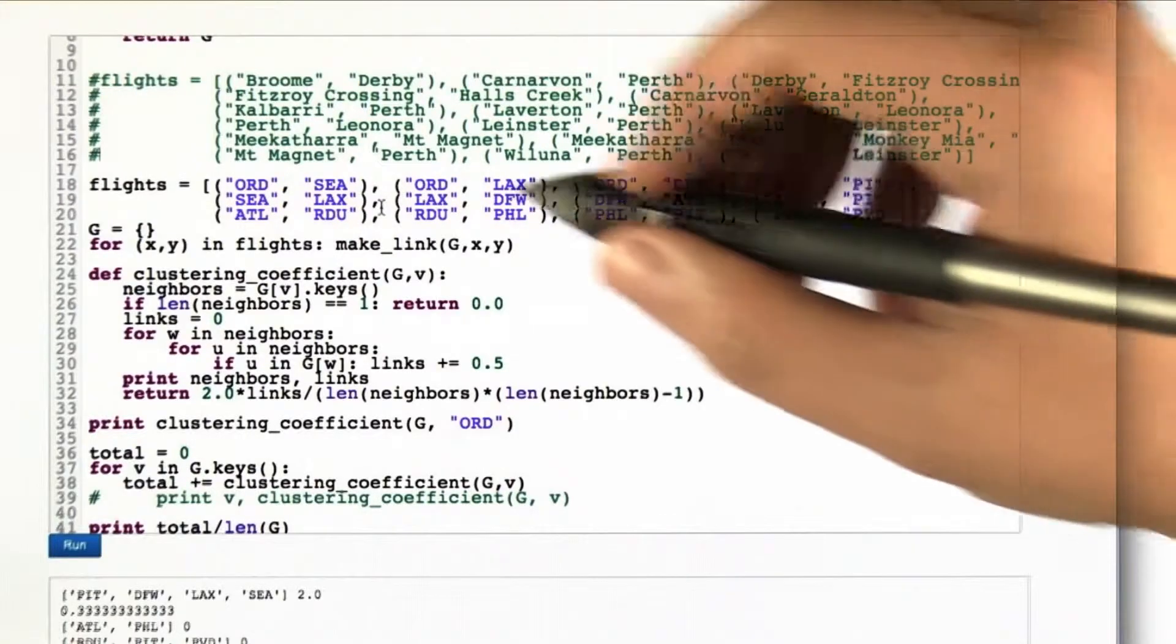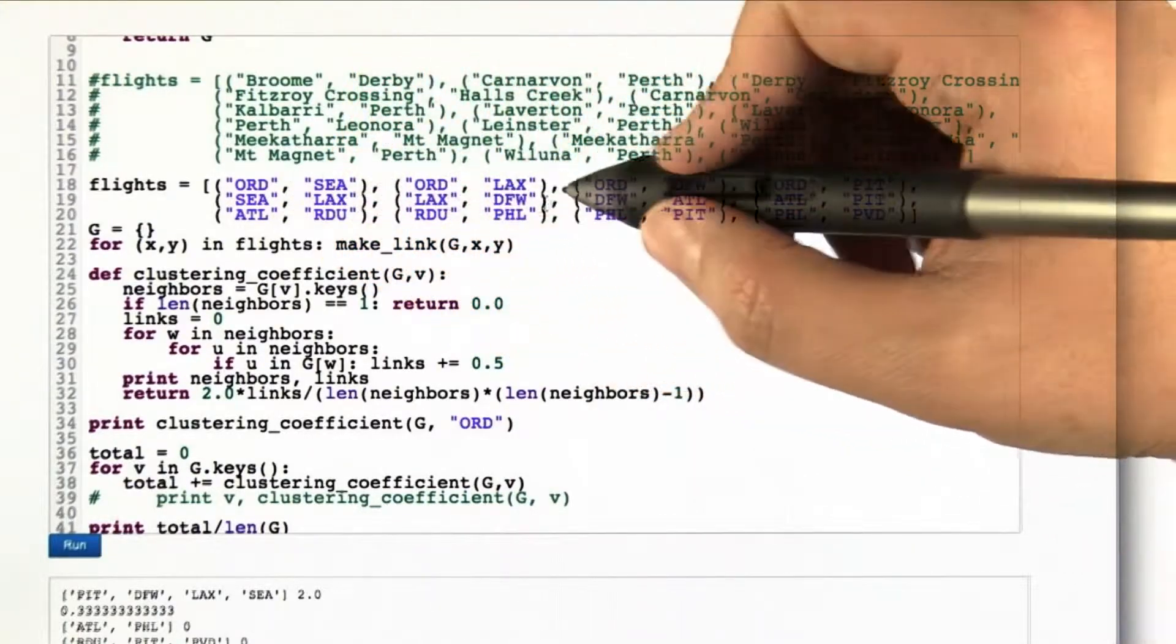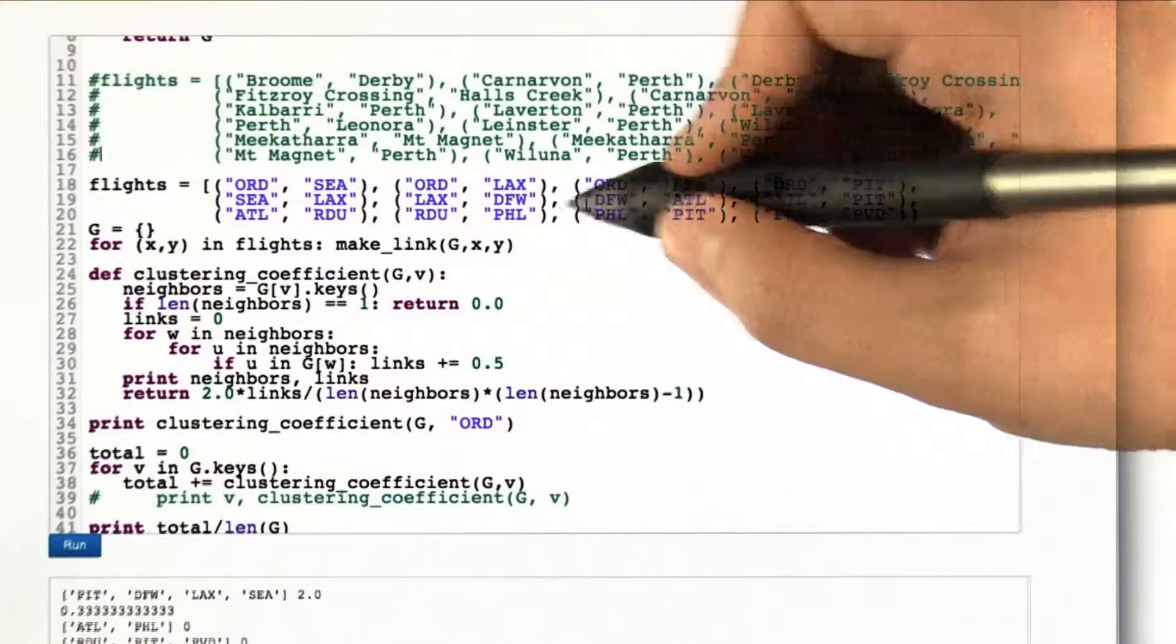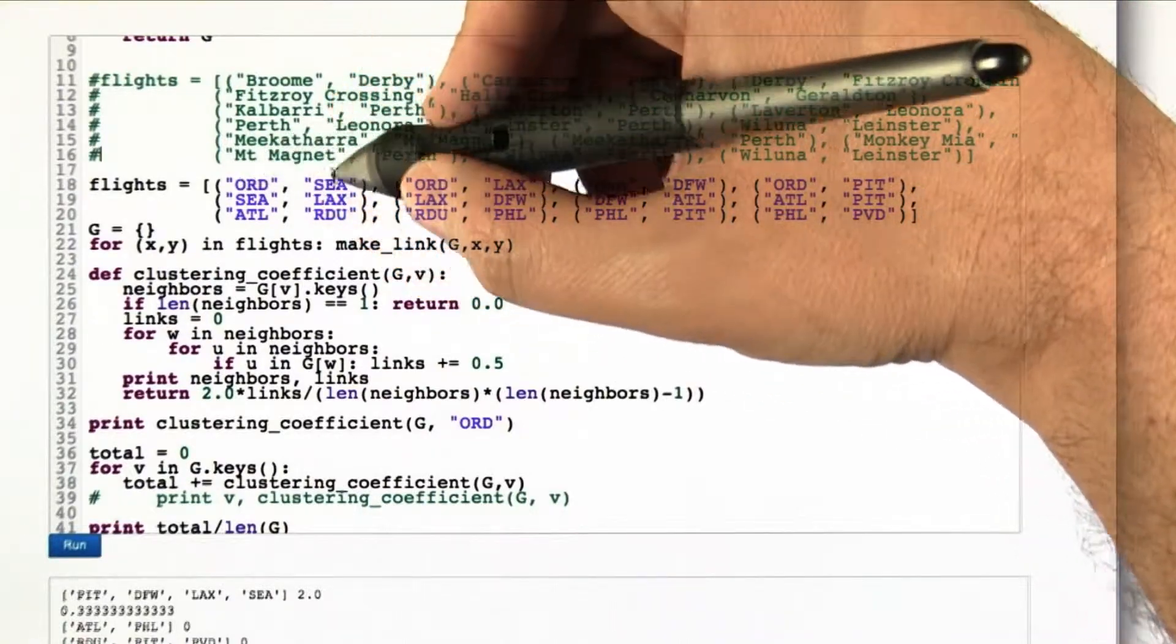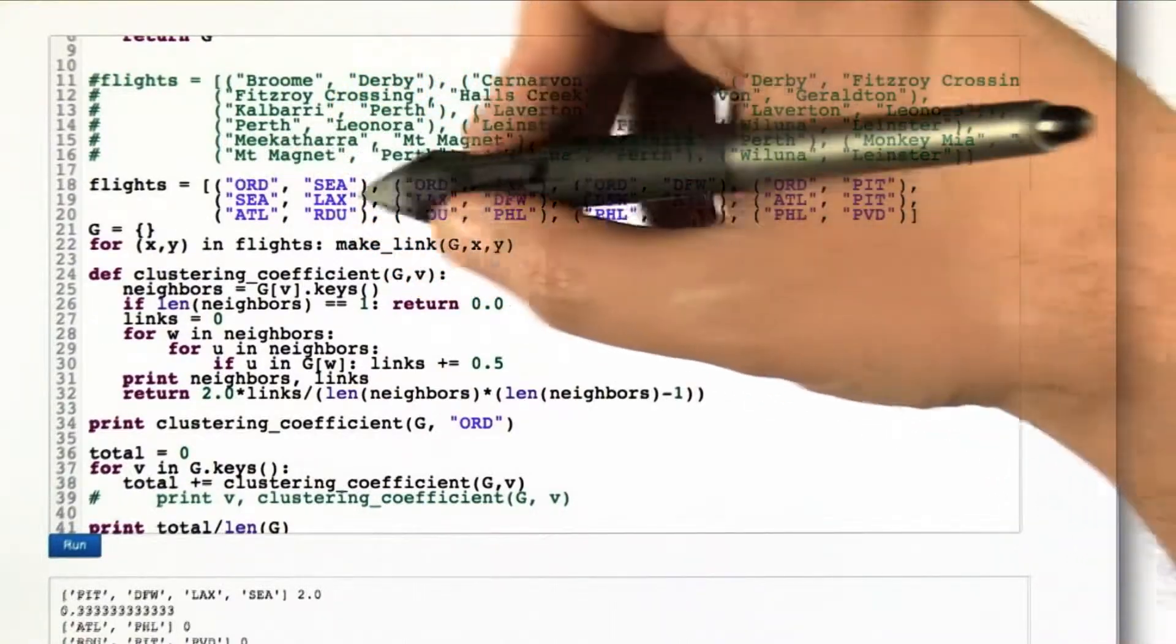Here's a little bit of code for computing the clustering coefficient, at least one particular way of computing it. Here's our list of flights on our map, you know, connection between Chicago and Seattle, etc. And I just have that as a list of pairs.